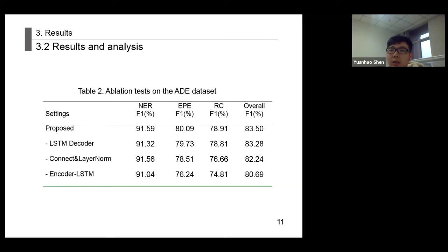We also conducted experiments by removing the encoder LSTM network and substituting it with an LSTM network. This approach has a significant impact on the performance of EPE module and RC module. This happens because the encoder structure can improve the ability of RNN to model sentences.